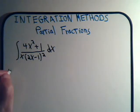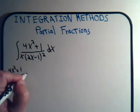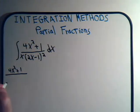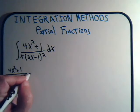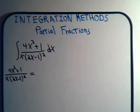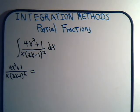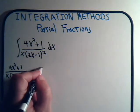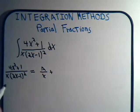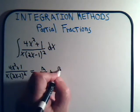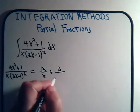We would say 4x squared plus 1 divided by x times 2x minus 1 squared. And that will equal, this is just a single variable x to the first power, so that would be some constant over that. Plus, this is a linear term, so we have a constant over that linear term.